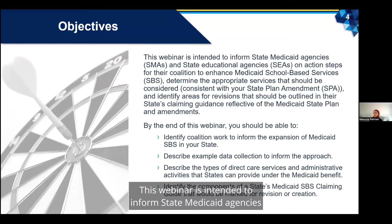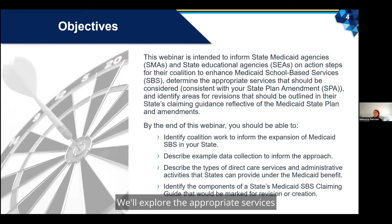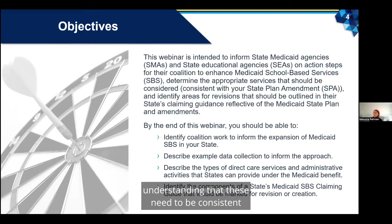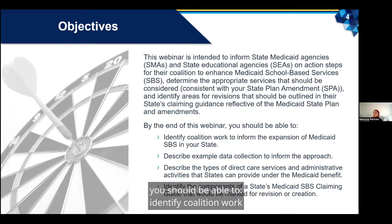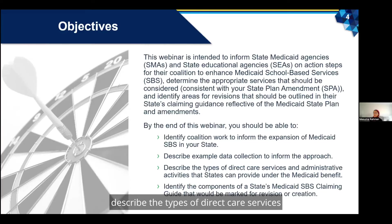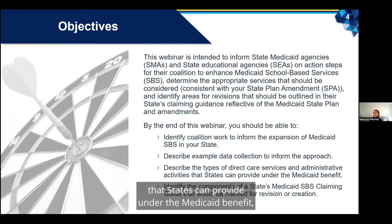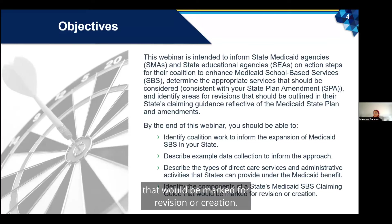This webinar is intended to inform state Medicaid agencies and state educational agencies on action steps for their coalition to enhance Medicaid school-based services. By the end of this webinar, you should be able to identify coalition work to inform expansion of Medicaid SBS, describe example data collection approaches, describe the types of direct care services and administrative activities states can provide under the Medicaid benefit, and identify components of a state's Medicaid SBS claiming guide marked for revision or creation.